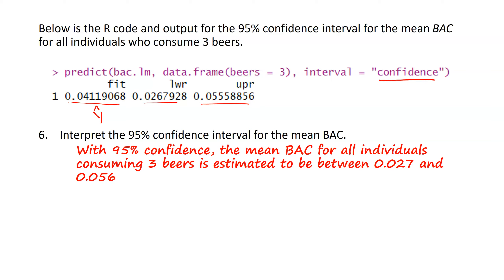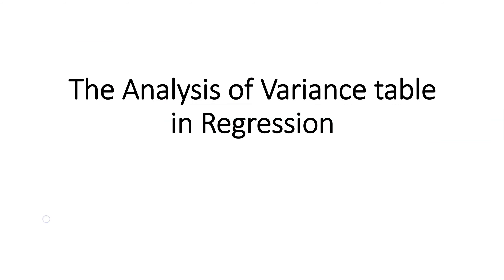The real take-home message is that we have this linear model and we can use it in a couple of different ways: we can focus on the relationship between the two variables and talk about the slope, and we also have the ability to use this model to make predictions for future individuals. Next, we're headed to the analysis of variance table.